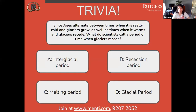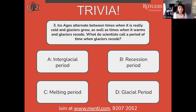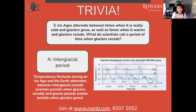Question three: ice ages alternate between times when it's really cold and glaciers grow, as well as times when it warms and glaciers recede. What do scientists call a period of time when glaciers recede? Is it A, interglacial period; B, recession period; C, melting period; or D, glacial period? The correct answer is A, interglacial period. Temperatures fluctuate during an ice age and the Earth alternates between interglacial periods — warmer periods when glaciers recede — and glacial periods, which are colder periods when glaciers grow.